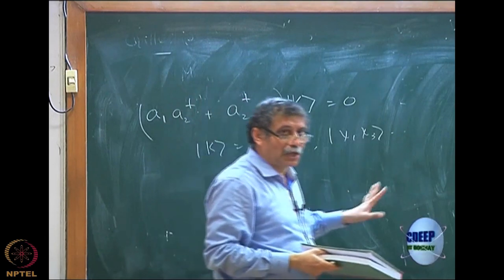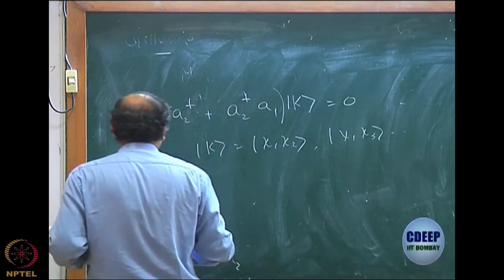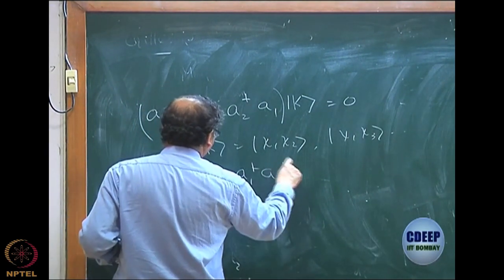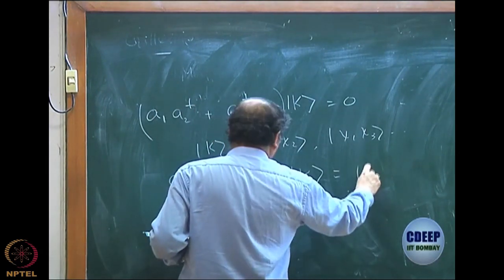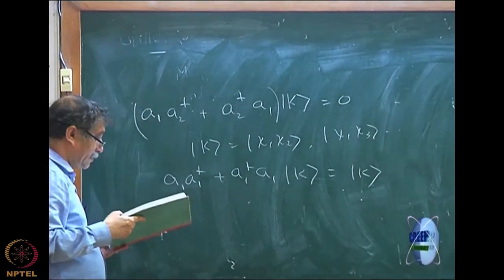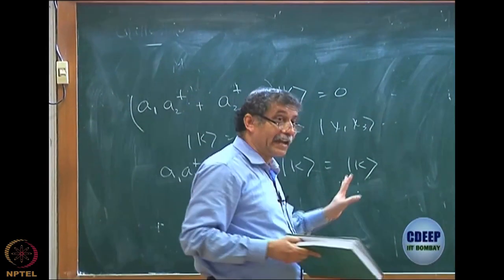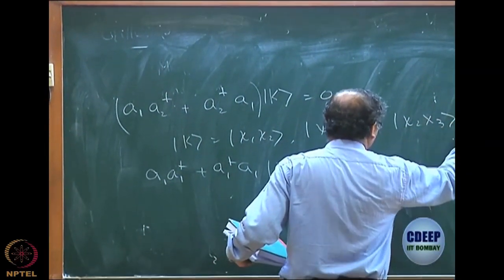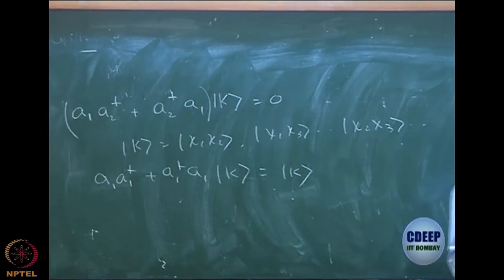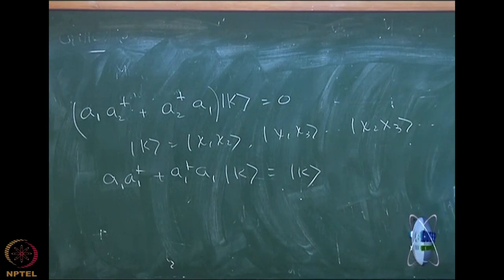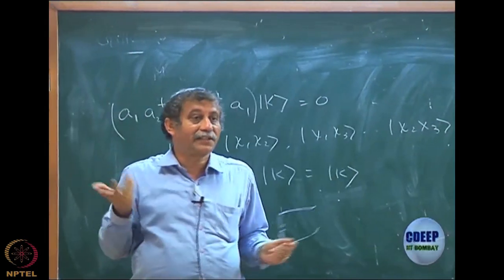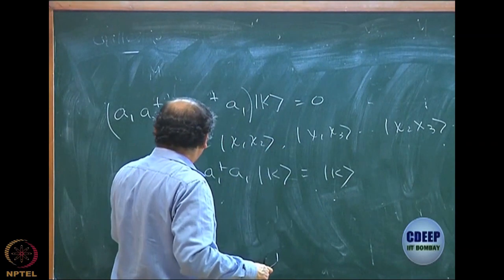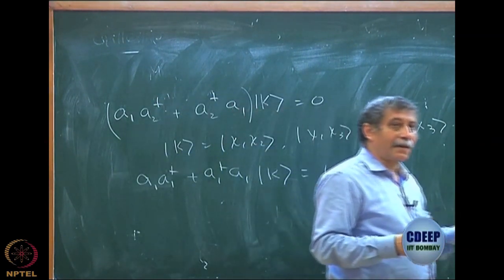Obviously it has to be 0 because of anti-commutation. And if you do A1 A1 dagger plus A1 dagger A1 on any of these kets, it should be equal to the same ket. That is very important to realize — the ket may not have chi1, it can be chi2 chi3. Do not get confused. Chi2 chi4, anything — because you may be confused about how A1 A1 dagger, when k does not have chi1, is still not 0. First I create here and then I destroy, so I get back the same ket.